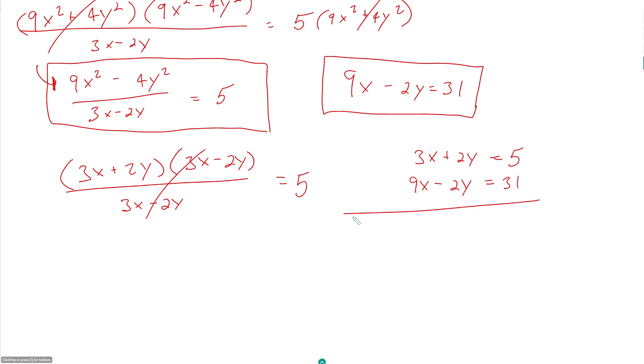They're asking for x, and just like before, our two equations line up very nicely. If I just add them, my y goes away, which is what I want. So 12x is equal to 36, x is equal to 3.